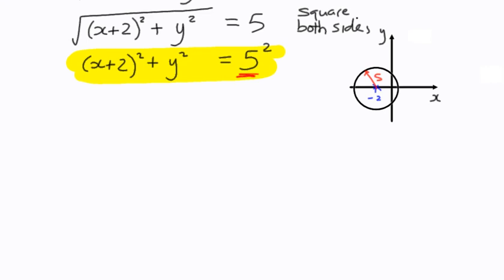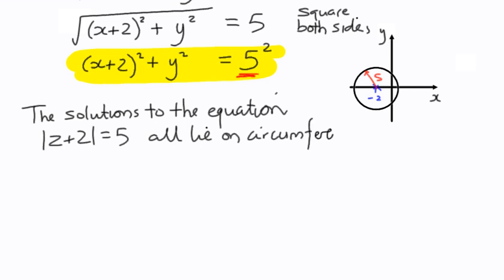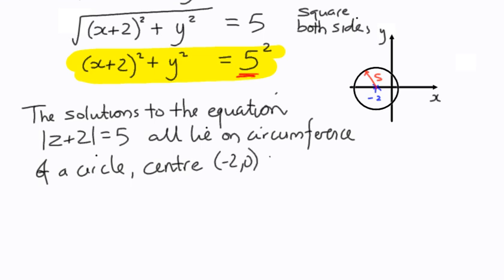So the geometric representation of the original equation — modulus of z plus 2 equals 5 — is a circle, and all solutions lie on that circle. We should write this in words: the solutions to the equation modulus of z plus 2 equals 5 all lie on the circumference of a circle with center at negative 2, 0 and radius 5. We have a written solution and a diagram to go with it.